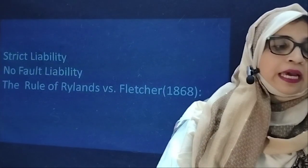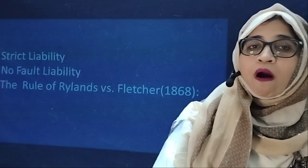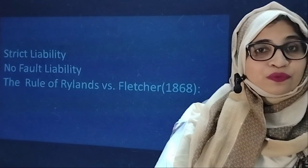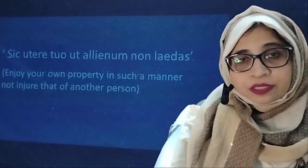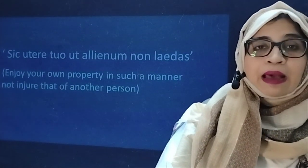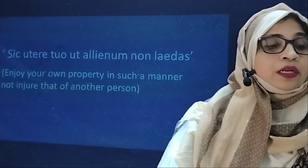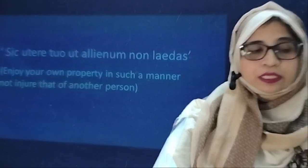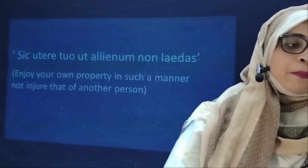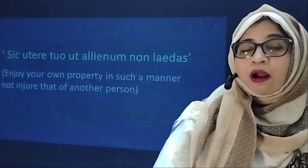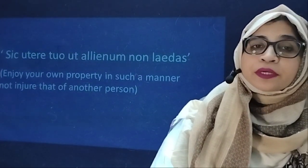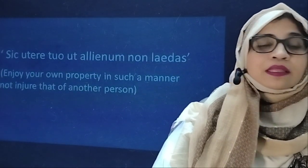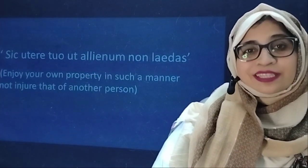Strict liability can also be called no fault liability, the rule of Rylands versus Fletcher, the doctrine of strict liability, or the rule in Rylands versus Fletcher's case. This strict liability arises from the legal maxim, the Latin term sic utere tuo ut alienum non laedas, which means enjoy your own property in such a manner as not to injure another person's property.